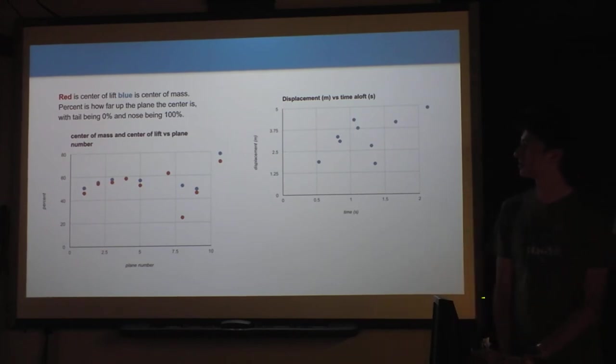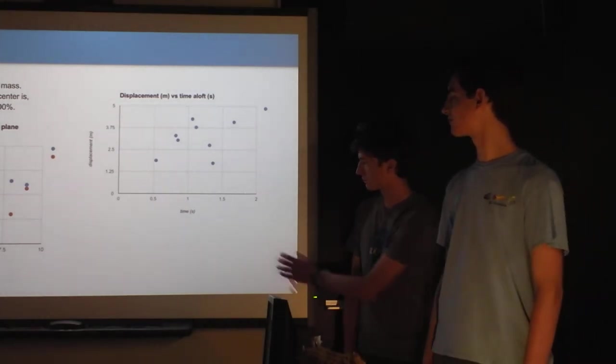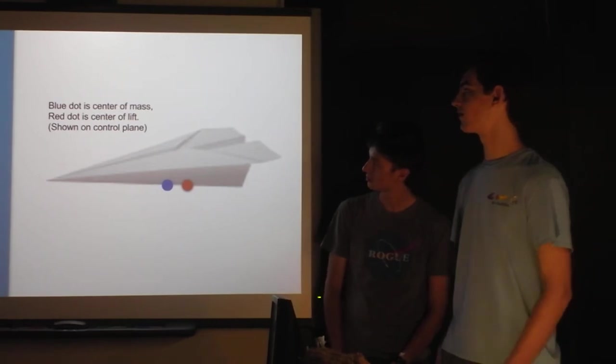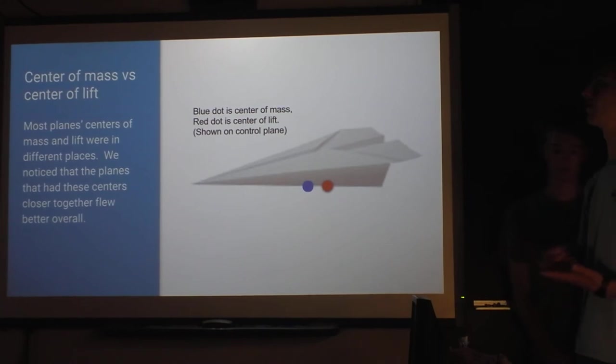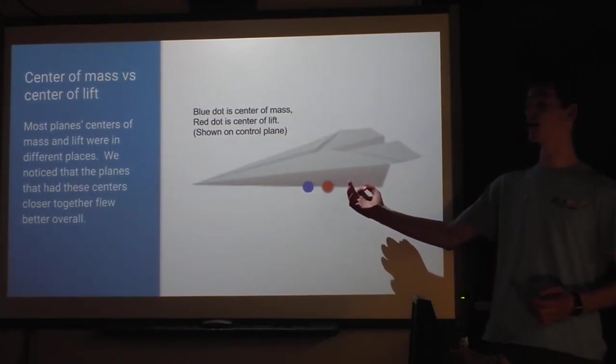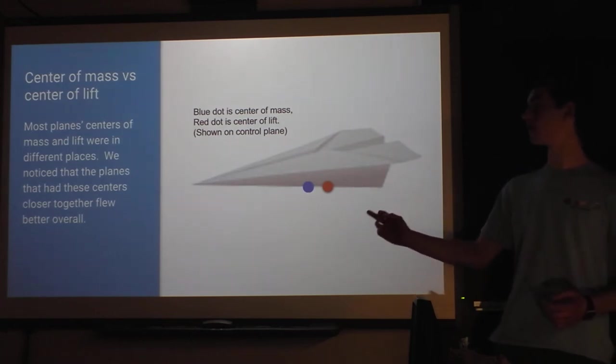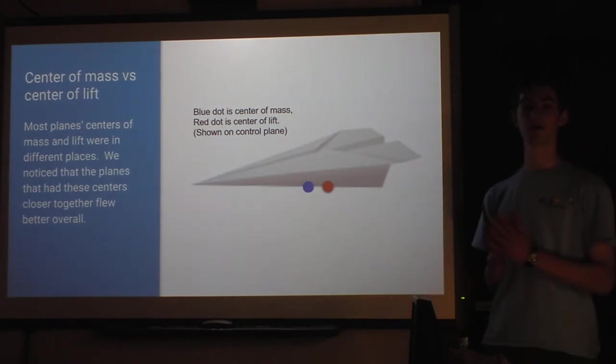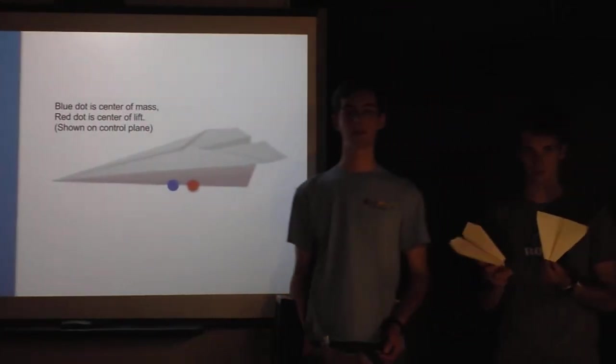And then this is another try at getting better data, but displacement versus time of loft, it's just... again. We found the center of mass versus the center of lift here. With each plane, they were in different places, but four and seven, they were very close to each other. And if they had them closer together, it was seven. Here's seven. And that was four. They flew better.